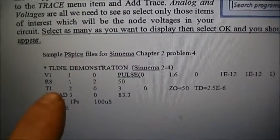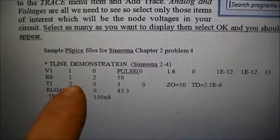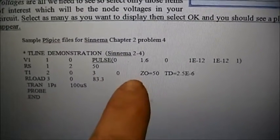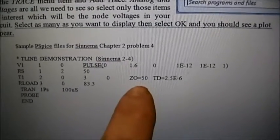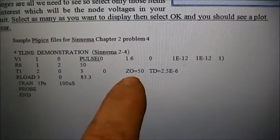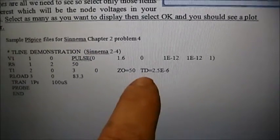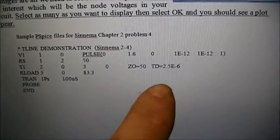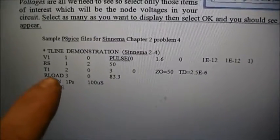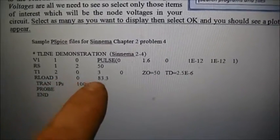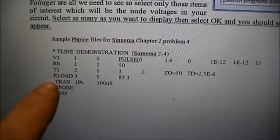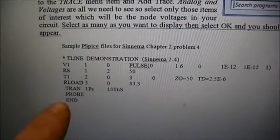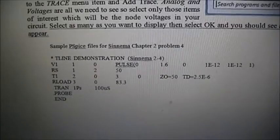And then here is the transmission line. T1, it's connected between nodes 2 and 0, and nodes 3 and 0 will be the output. We have spaces in here. The spaces separate the data. And the Z sub 0 of the cable is 50 ohms. And then the time delay is 2.5 microseconds. We don't put a specific RG8 cable in there, but that's how we describe it. The last part is the load between nodes 3 and 0 of 83 ohms. And then we have a transient statement to collect data, the probe to allow us to do pictures, and then the end statement to end the file. That's all we need to do to simulate our circuit.